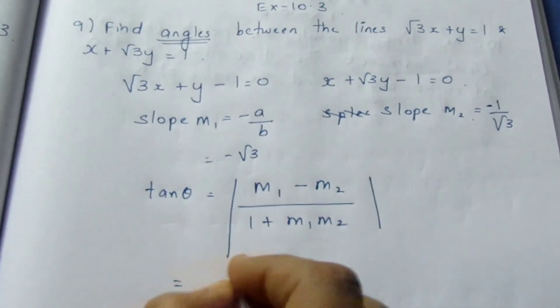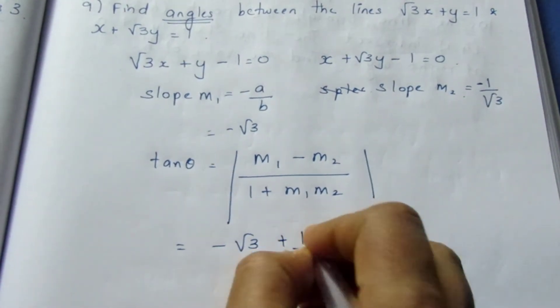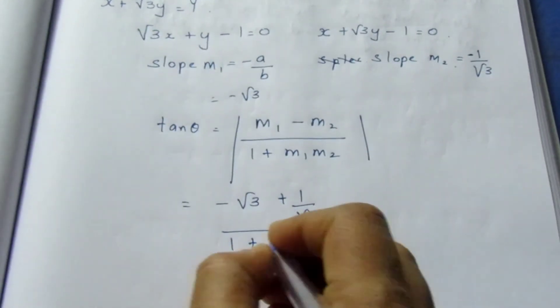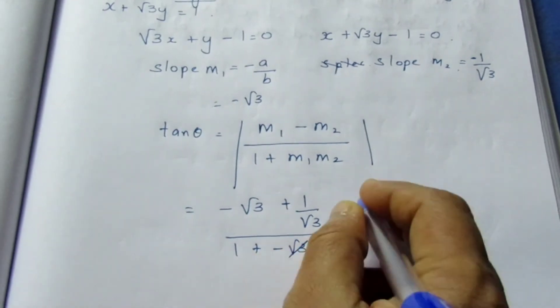Just substitute the value here. It becomes -√3 - (-1/√3) by 1 + (-√3)·(-1/√3). Here this gets cancelled.